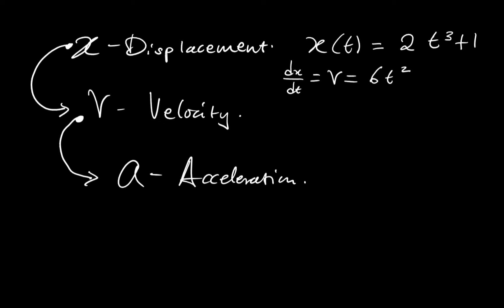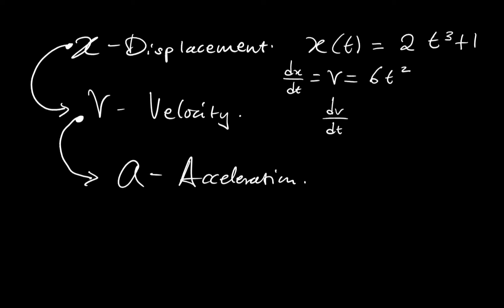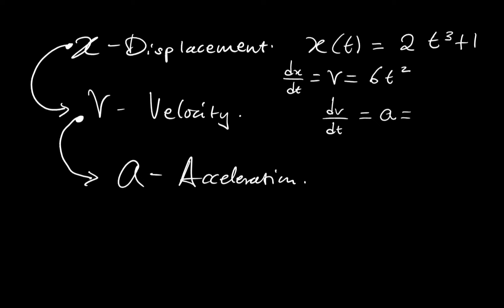Now, since we have the velocity function v = 6t² with respect to time, if we differentiate it — dv/dt, the change in velocity over a period of time — we get the quantity called acceleration. Using the power rule on the velocity function gives the acceleration function as 12t. So: differentiating displacement gives velocity, and differentiating velocity gives acceleration.